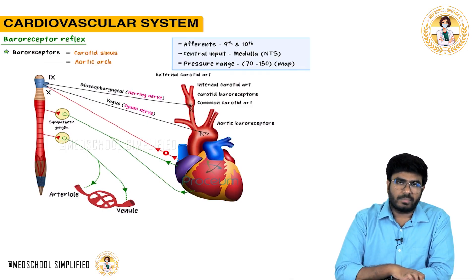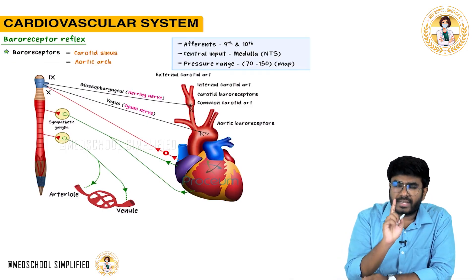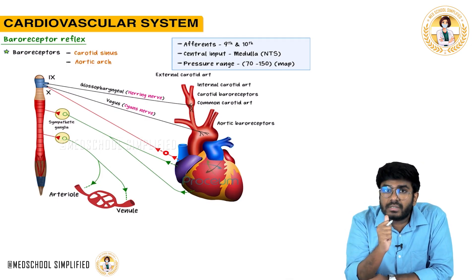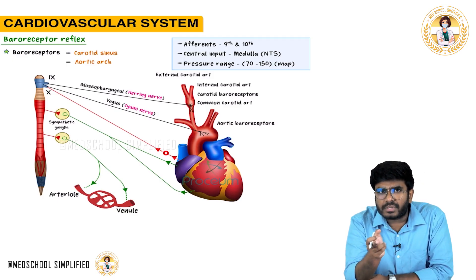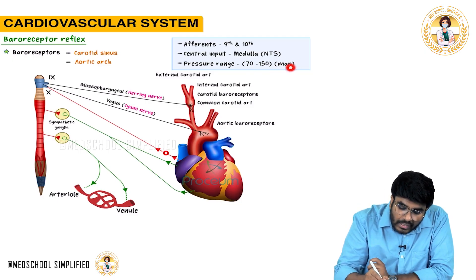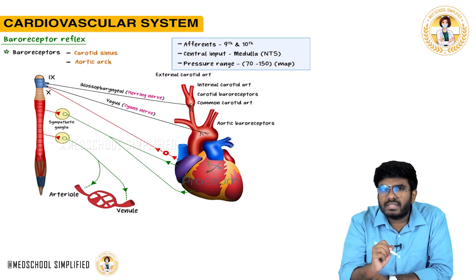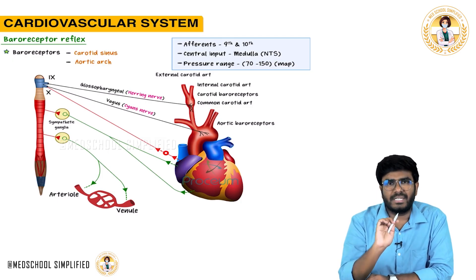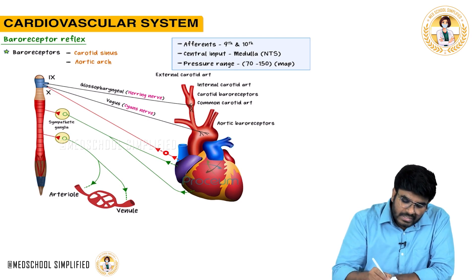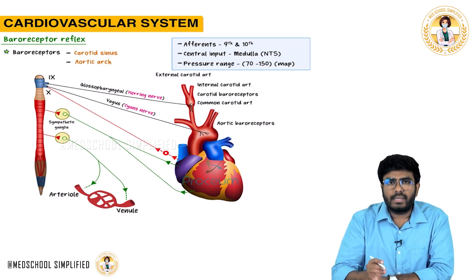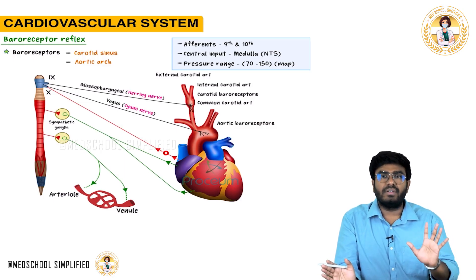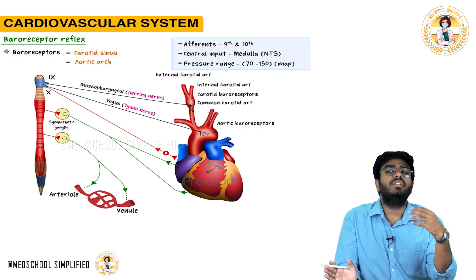Baroreceptors are sensors that detect blood pressure — specifically mean arterial pressure. The normal MAP is 93 mmHg. These baroreceptors work within a pressure range of 70 to 150 mmHg. Within this range they detect MAP and relay information to the central nervous system.